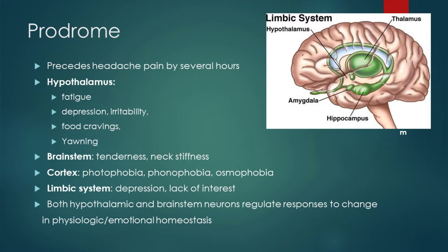The brainstem is implicated in causing tenderness and stiffness of the neck. The cortex — the covering of the brain — is responsible for light, sound, and smell sensitivity. The limbic system, which is a combination of the hypothalamus, thalamus, hippocampus, and amygdala, contributes to depression and lack of interest. Both hypothalamic and brainstem neurons regulate responses to stimuli from both outside and inside the body.